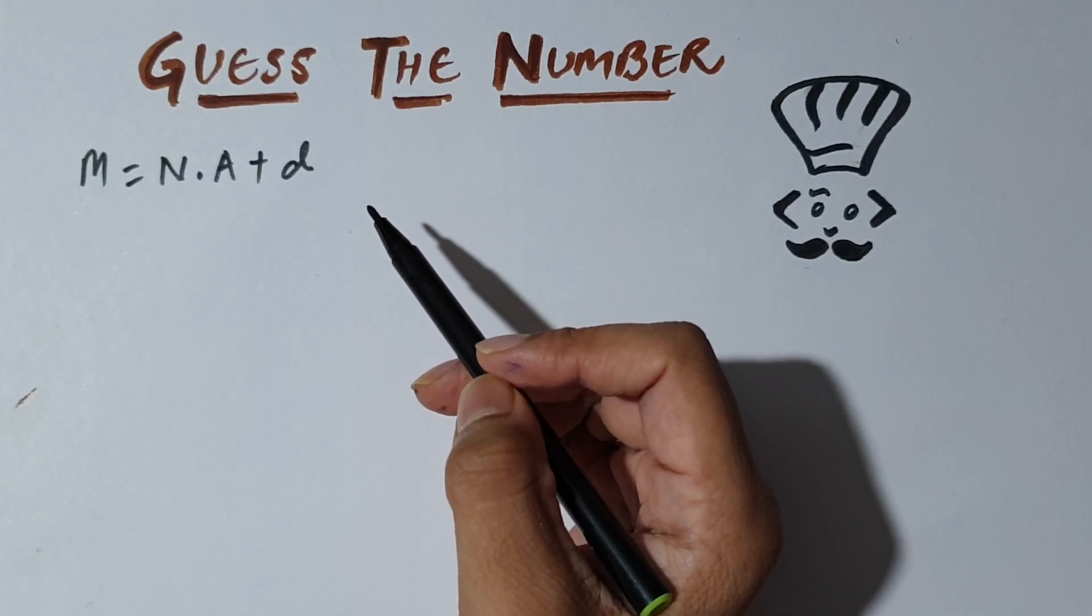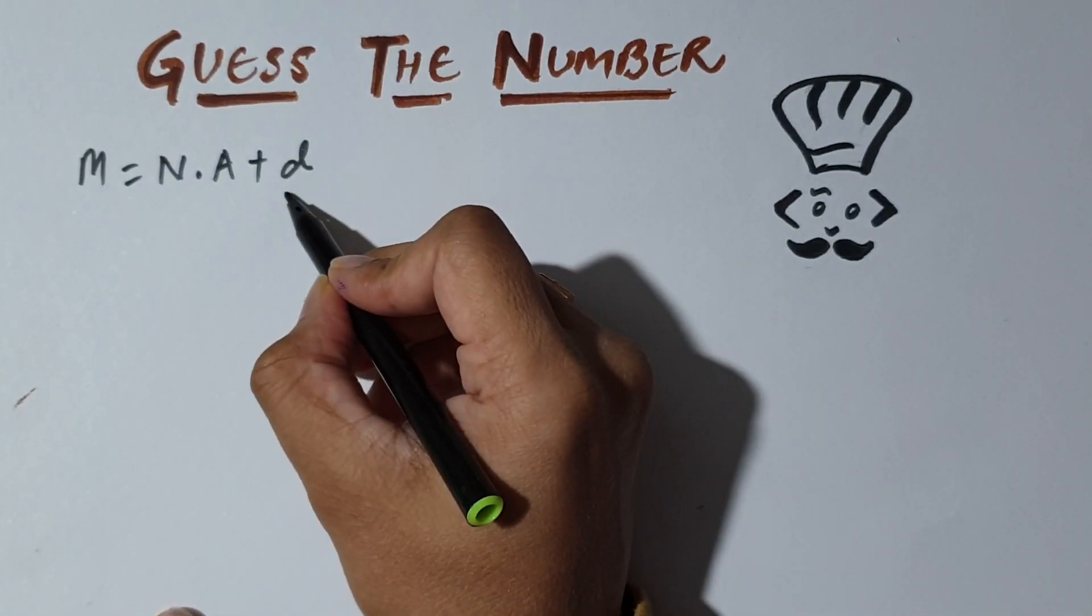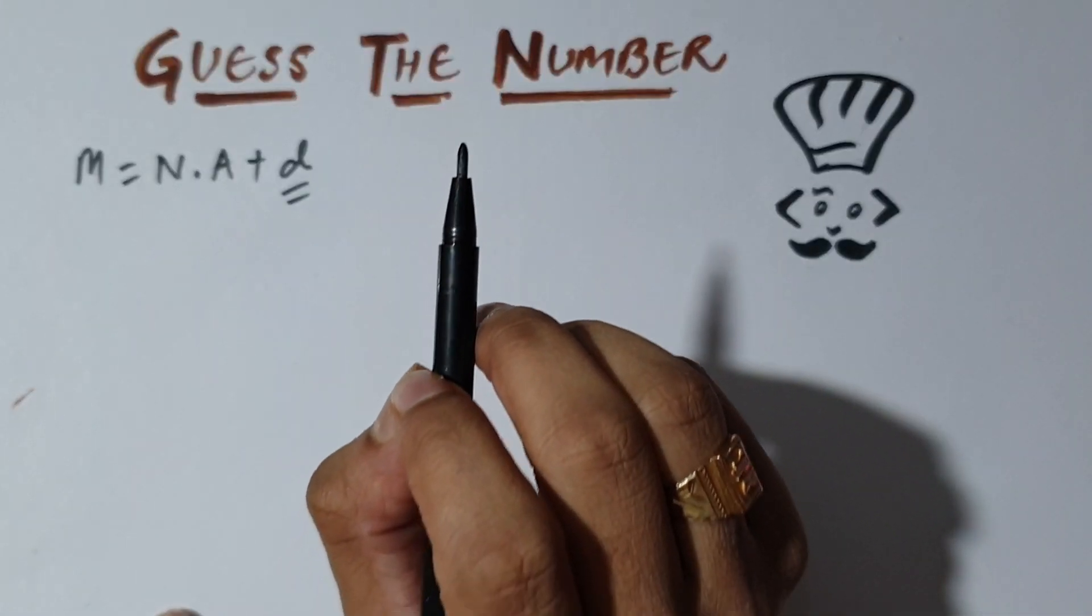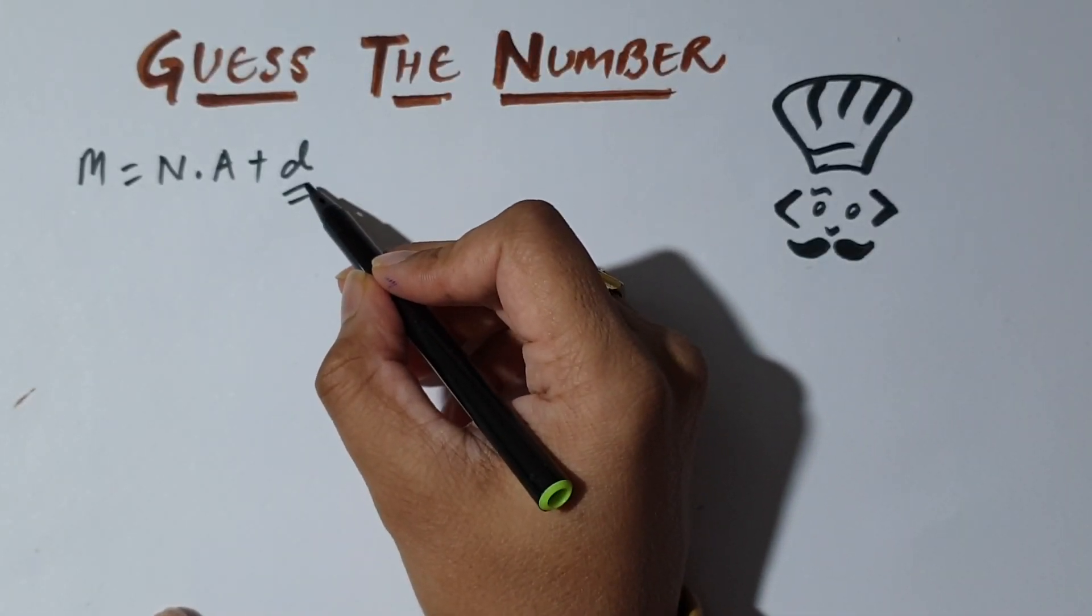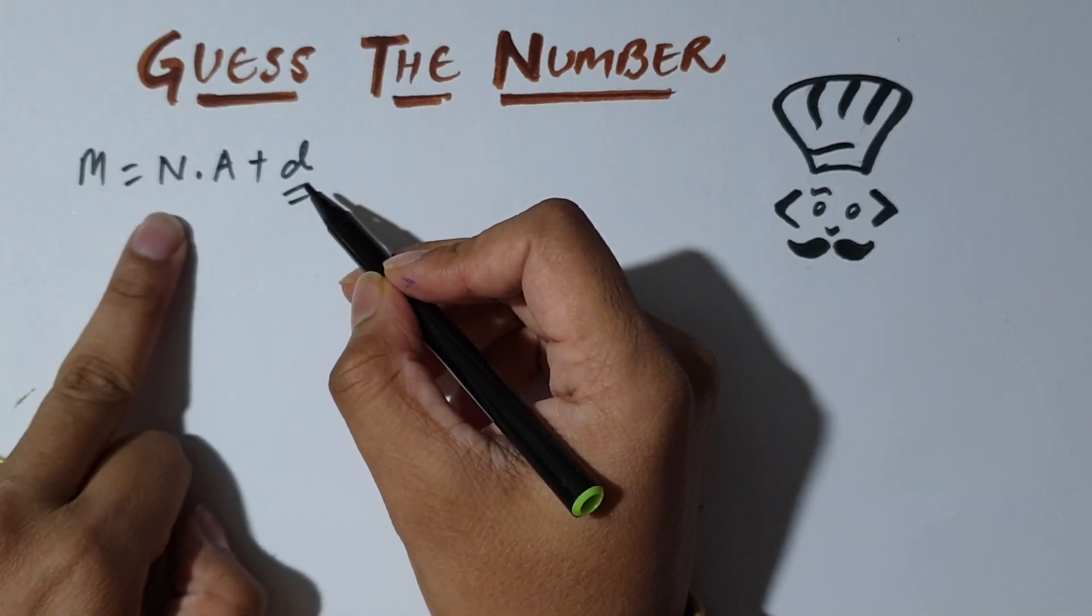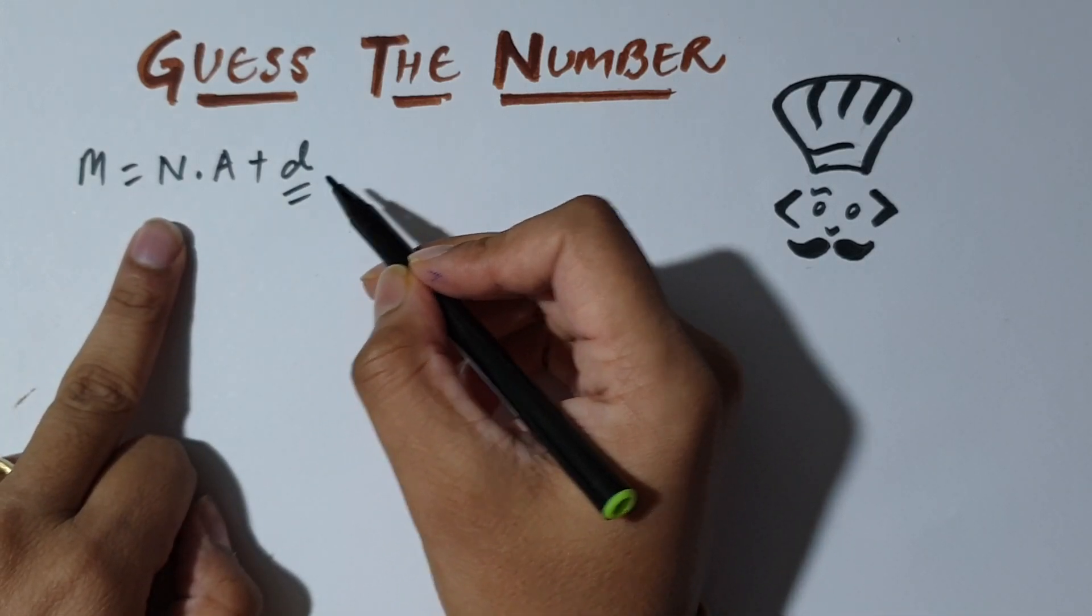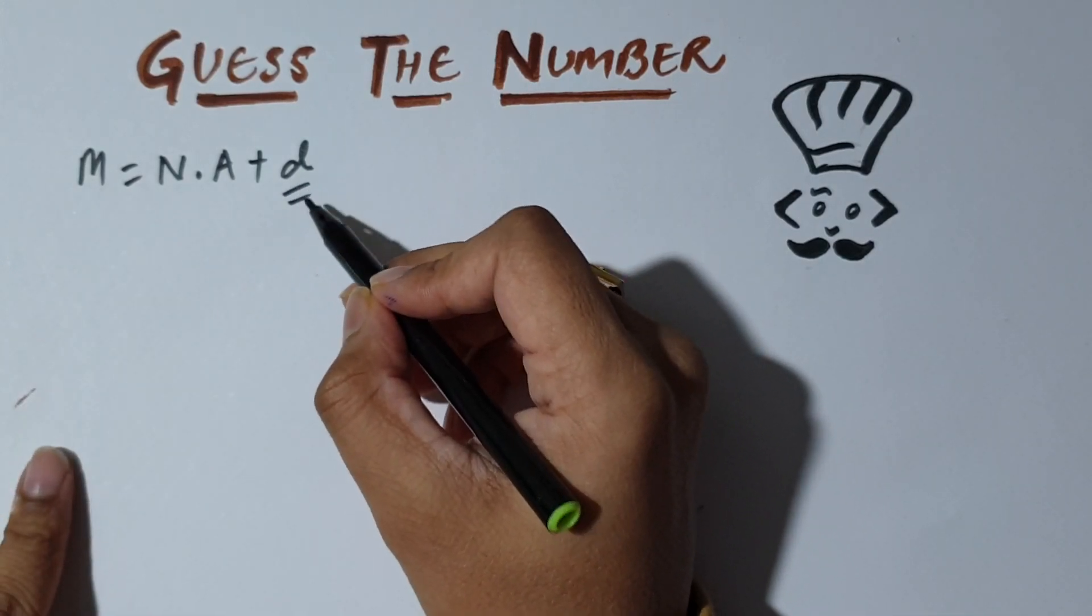So one thing to notice here is that d is an integer, because d is a divisor of N. So we'll be using this fact.